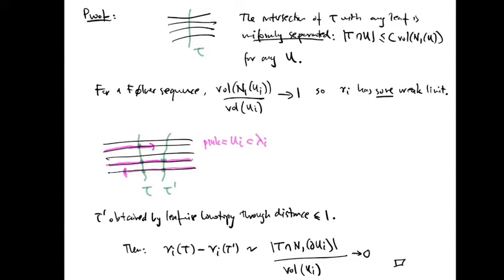We shall now show that nu is an invariant transverse measure. To show this, we need to show that nu of tau equals nu of tau prime whenever tau prime is obtained by leafwise homotopy from tau. It suffices to do this when the tracks of the homotopy have bounded size, let's say distance 1. nu_i of tau is the number of intersections of tau with U_i divided by the volume of U_i, and nu_i of tau prime is the number of intersections of tau prime with U_i divided by the volume of U_i.